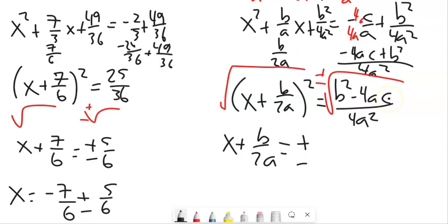Let's see, square root of B squared minus 4AC. I'm just going to leave that as B squared minus 4AC all over square root of 4A squared. Square root of 4 is 2. Square root of A squared is A.